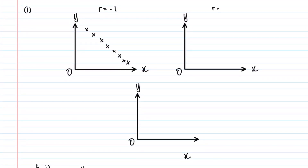When r equals zero, it means there is no correlation between x and y, so your points can be all over the place — anywhere you want. You can have one point here, two, three, four, five, six, seven, eight — something like that is fine, as long as the points show no correlation.